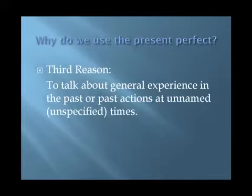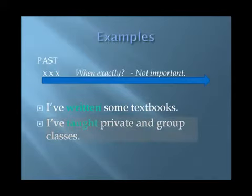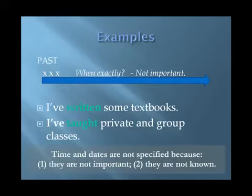A third reason why we might use the present perfect is to talk about general experience in the past, or past actions at unnamed or unspecified times. Consider these two examples — in both cases, I'm speaking in general about my professional experience. The first: I've written some textbooks. The second: I've taught private and group classes. Do you need to know when exactly I wrote the books or when exactly I taught these classes? No, you don't. So in the present perfect, times and dates are unspecified, usually because they're not important, but they could also be unknown.